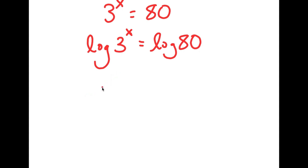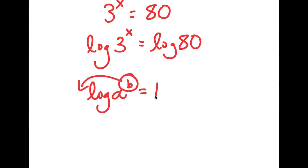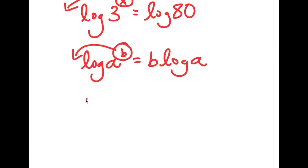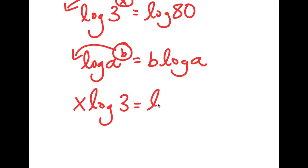There is an important property of logarithms: if you have log(a to the power of b), you can move the exponent b to the front, so this equals b times log a. In this case I have log(3 to the power of x), so I move x to the front and get x times log 3 equals log 80.